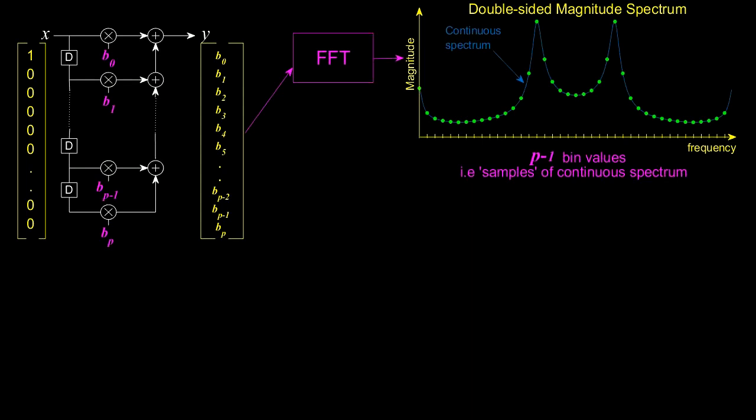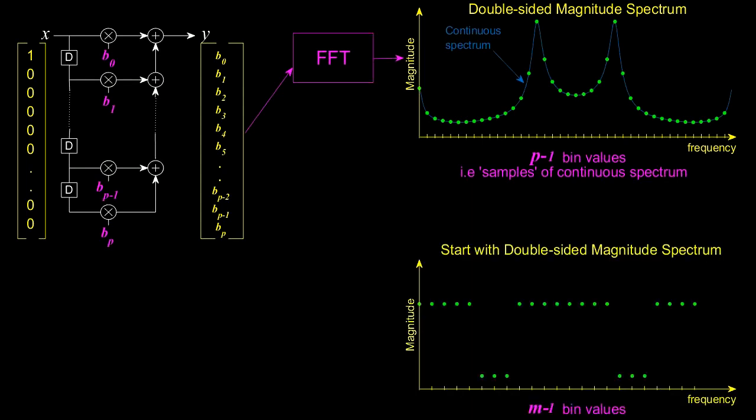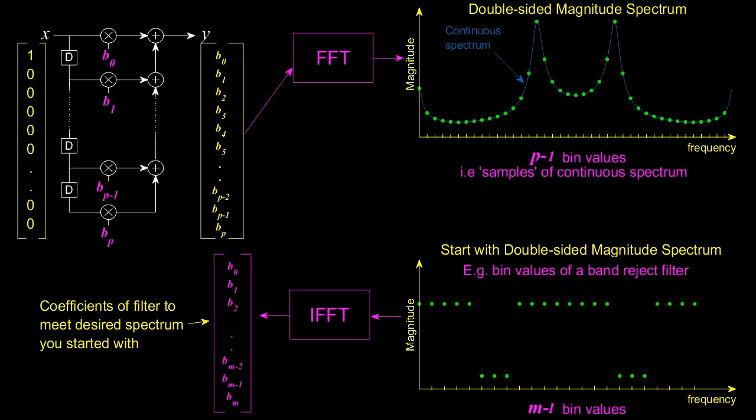If this all makes sense then you could be led to believe that you could design an FIR filter with any frequency response by starting with the desired magnitude response like the band reject filter shown and taking the inverse FFT to get the B coefficients of the filter. And this is possible and I'll provide a link to some example code in the description part of the video.